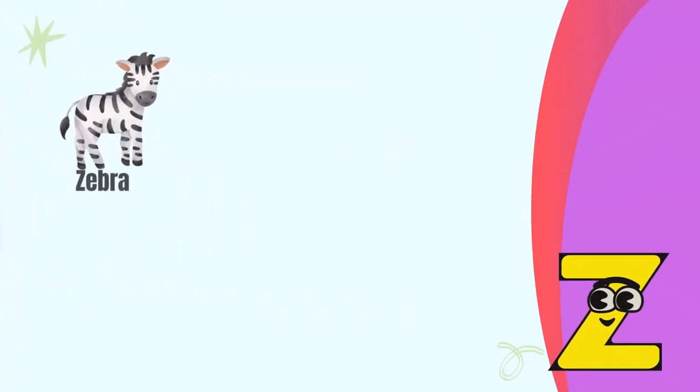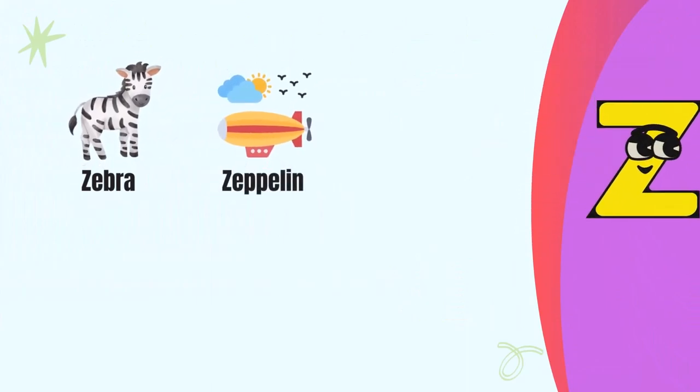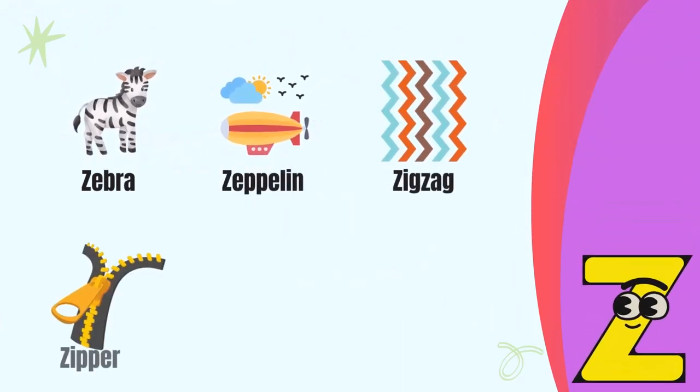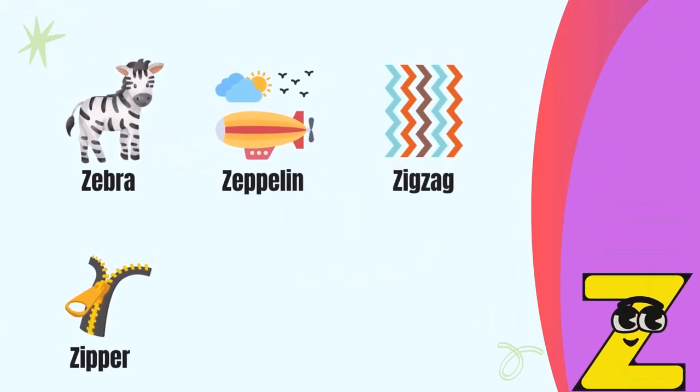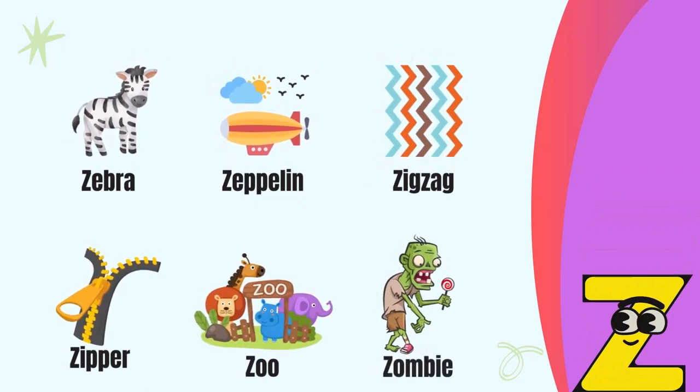Letter Z. Z for zebra, Z for zeppelin, Z for zigzag, Z for zipper, Z for zoo, Z for zombie.